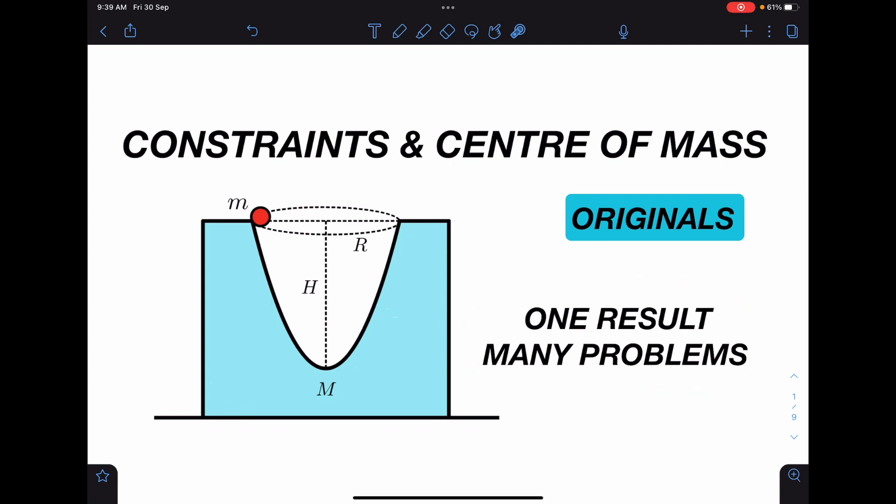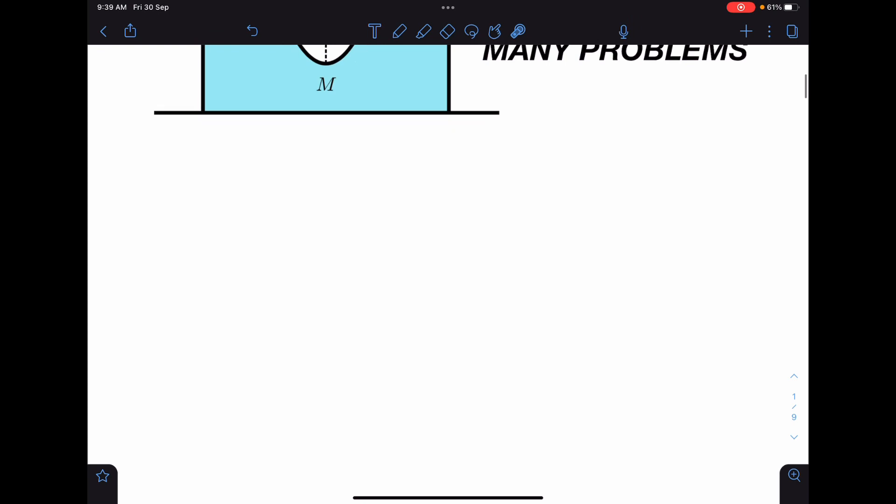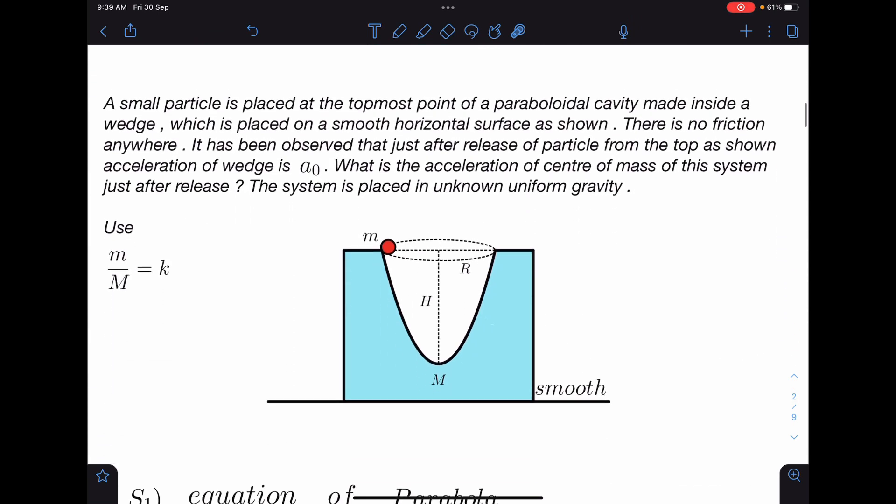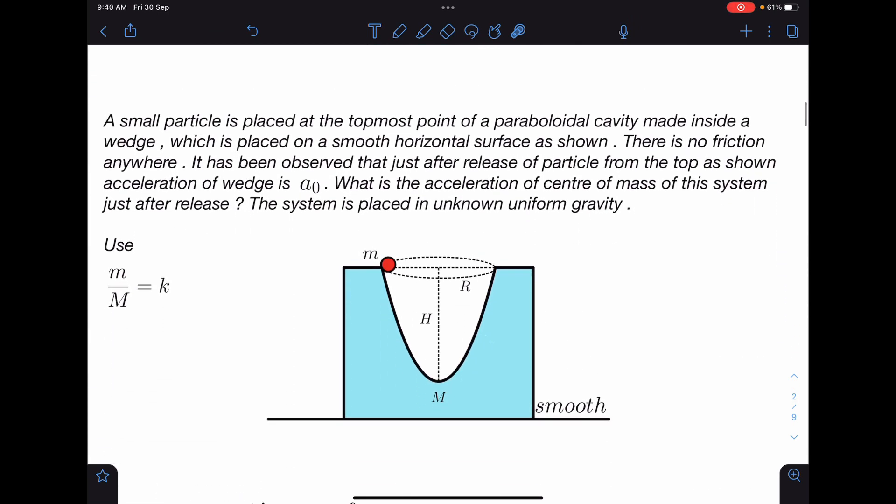Here is the problem statement: a small particle is placed at the topmost point of a paraboloidal cavity made inside a wedge which is placed on a smooth horizontal surface as shown.